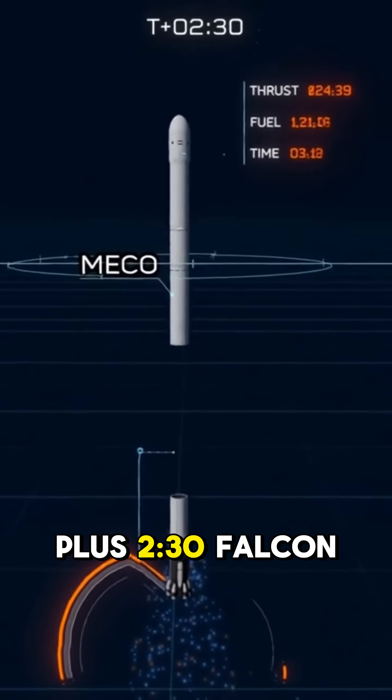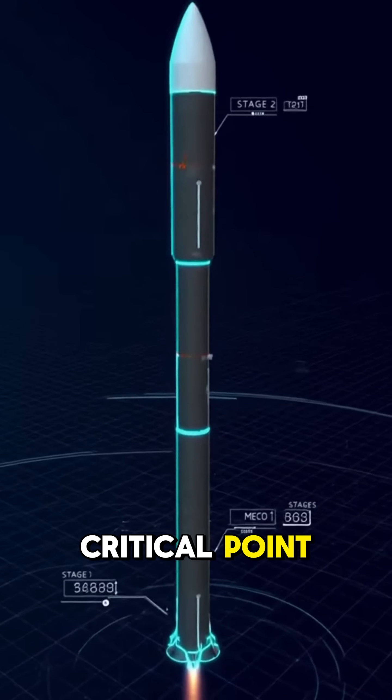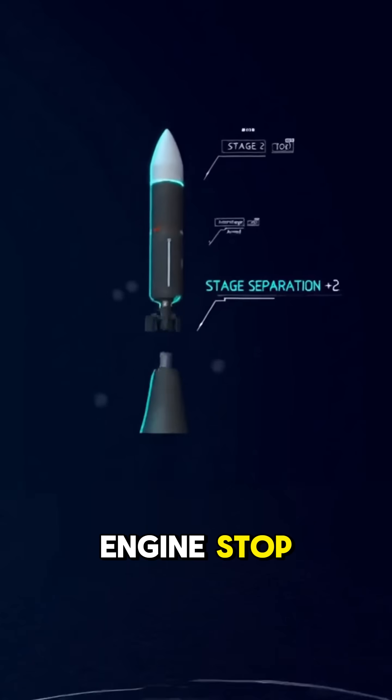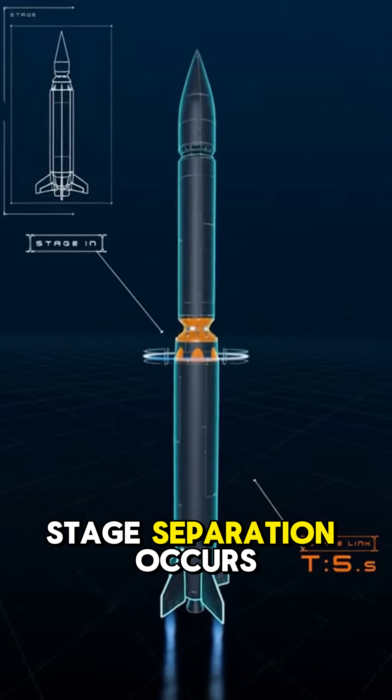At around T-plus 230, Falcon 9 hits a critical point, MECO, or main engine cutoff. The first stage engines stop, and just two seconds later, stage separation occurs.